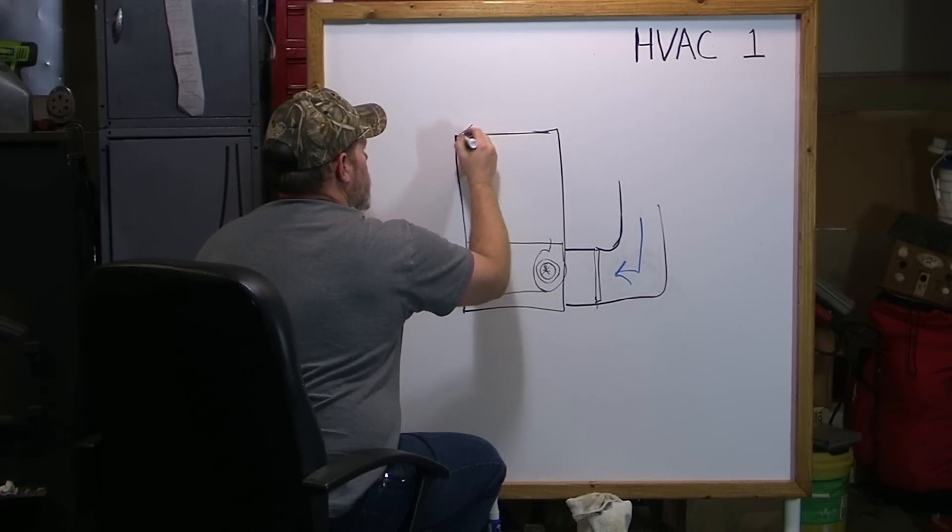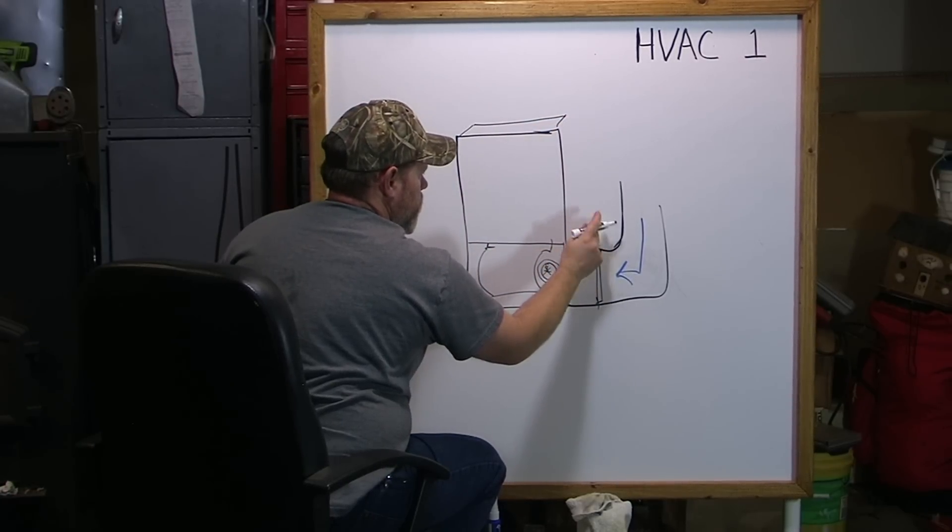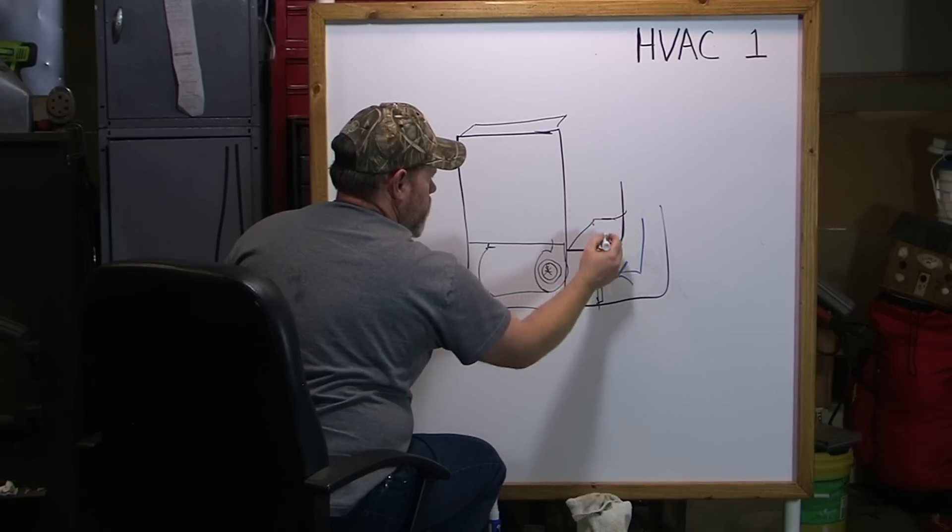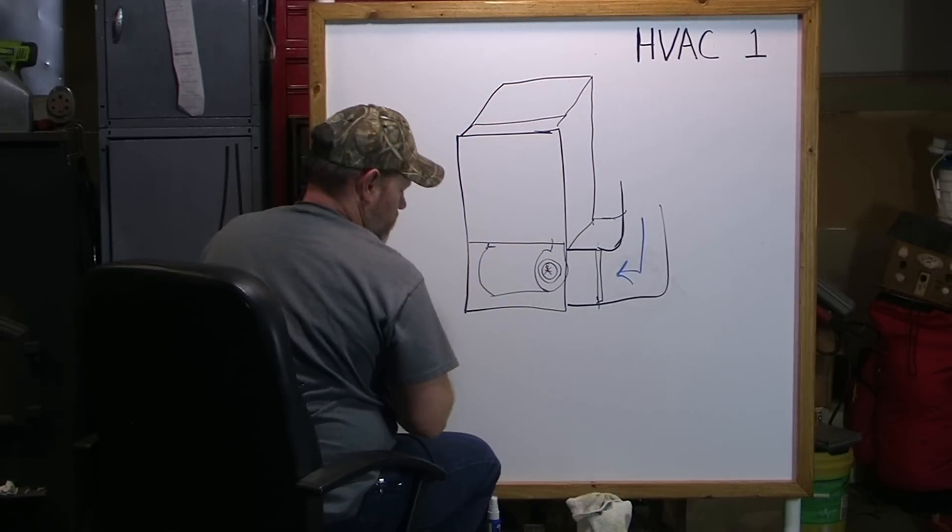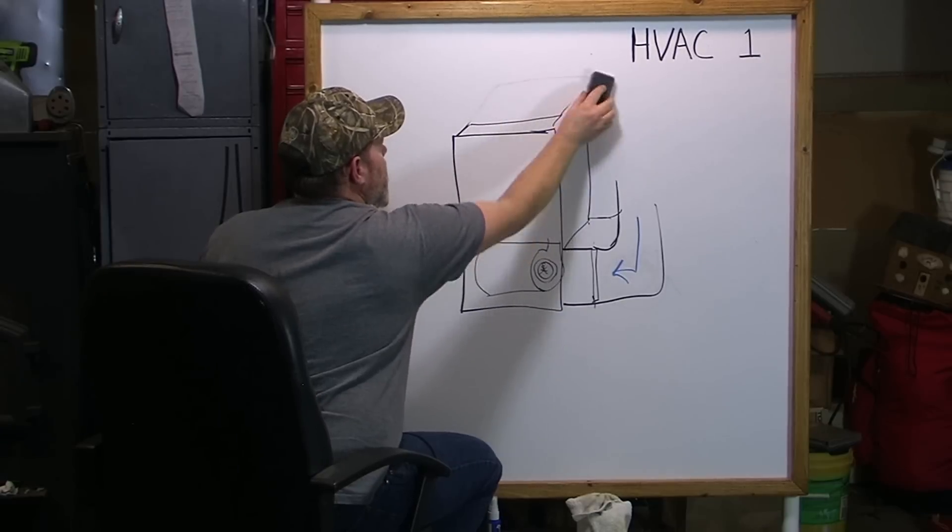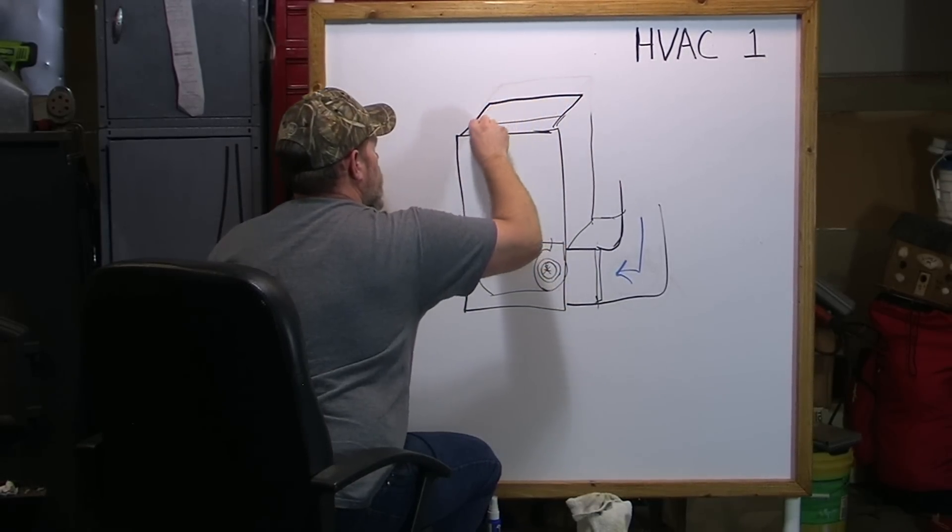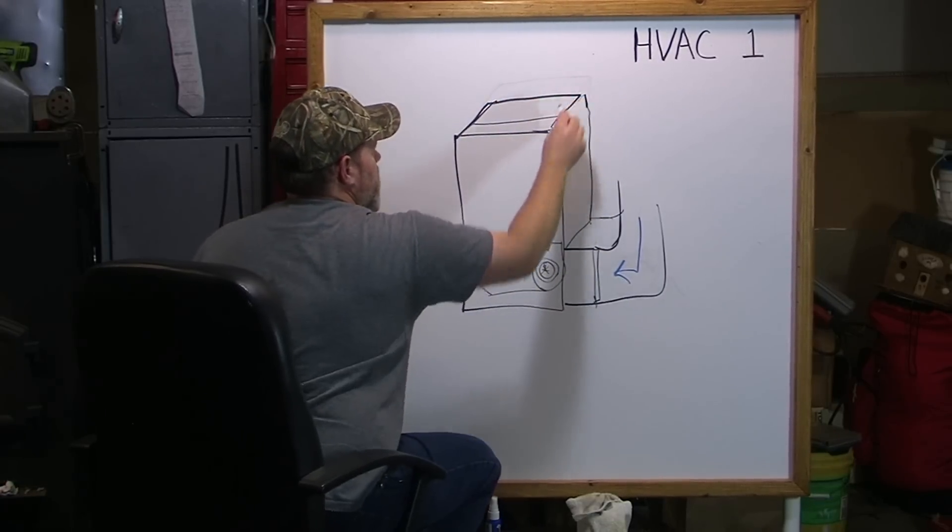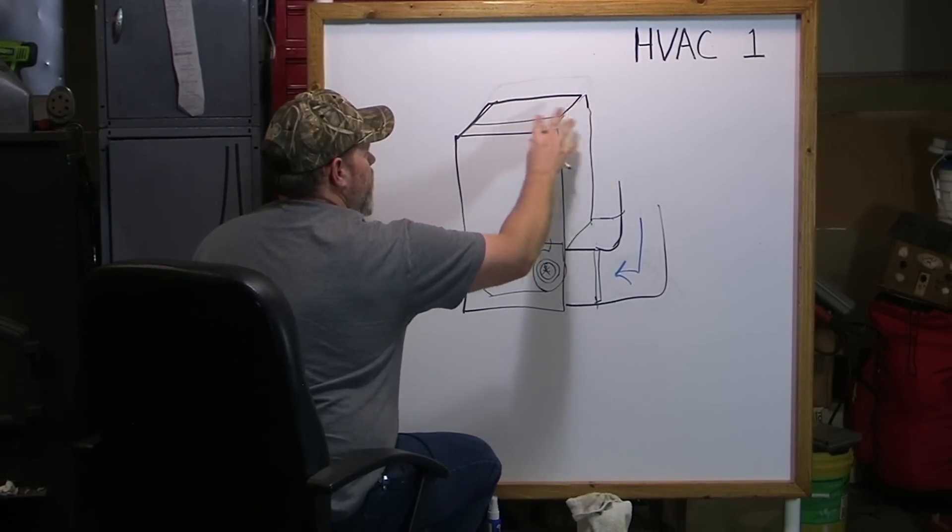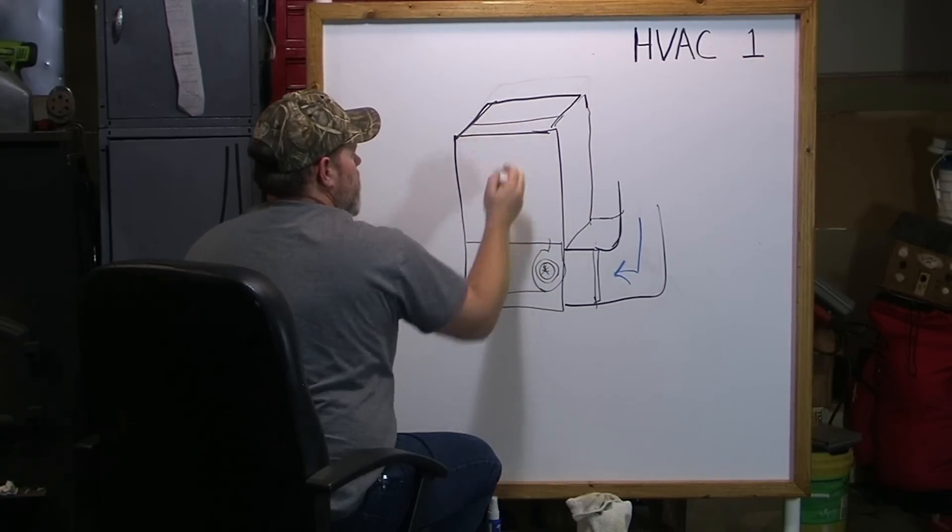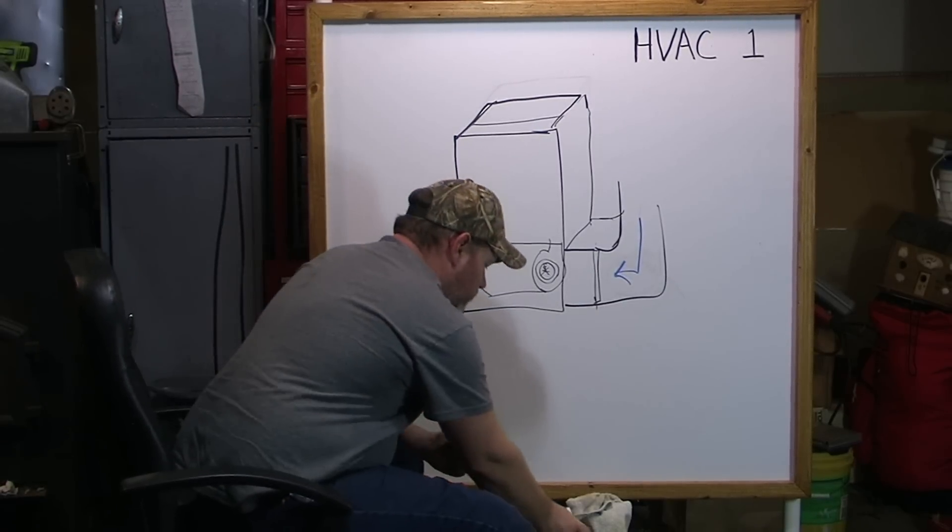This is the body of the furnace, the outer casing, and there's usually a top plate here. There are different furnaces with different efficiency ratings.